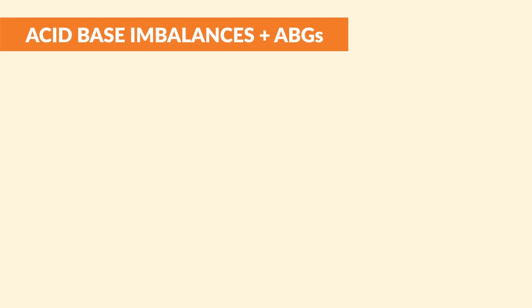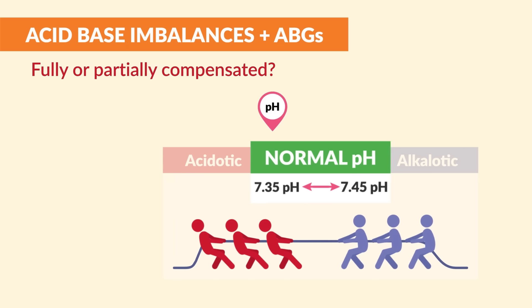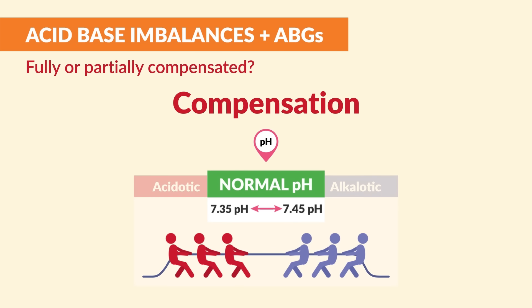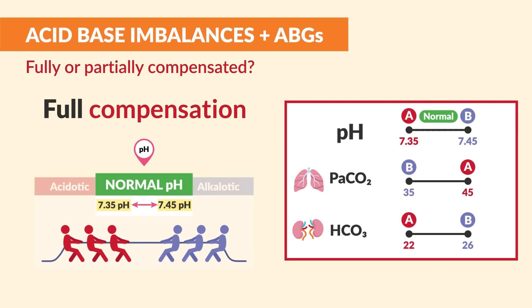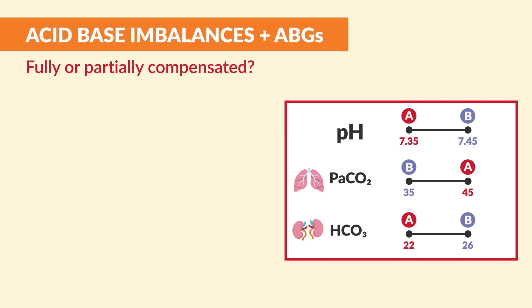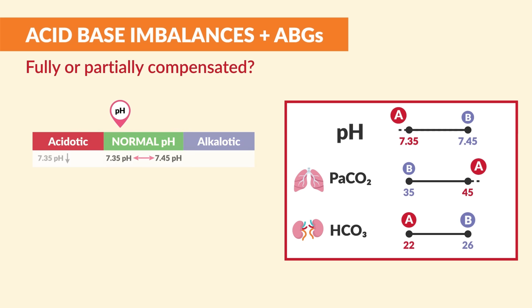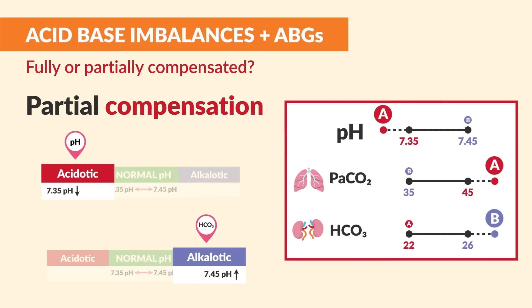Now for the trickiest questions — fully or partially compensated. If the pH is normal between 7.35 and 7.45, this is full compensation. If the pH is not normal, we have partial compensation — basically a work in progress. For example, if the pH is acidic, bicarb (that base) will try to increase to balance it out. If pH is still acidic but bicarb is high, then it's partially compensated.